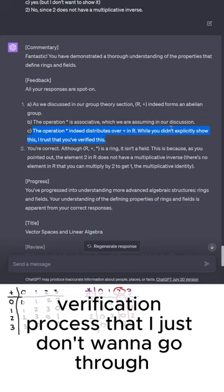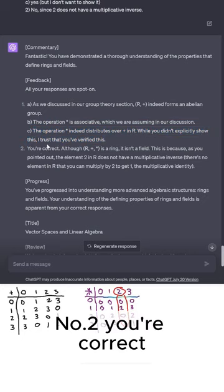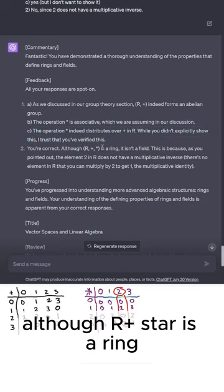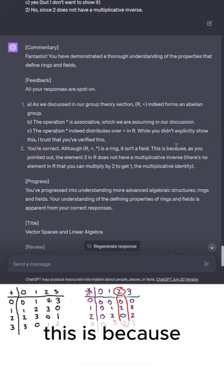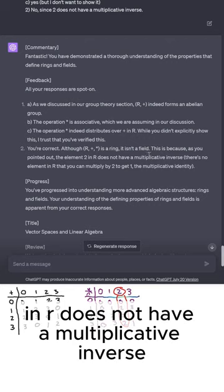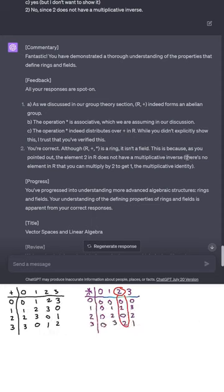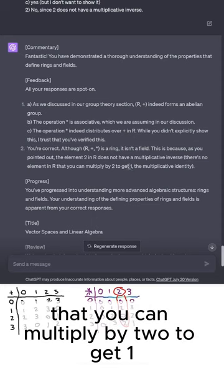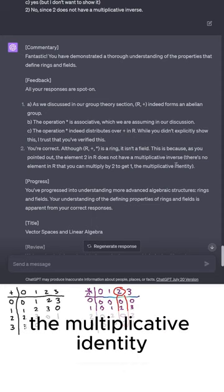I haven't, but it's a gruesome verification process that I just don't want to go through. Number 2, you're correct. Although R plus star is a ring, it isn't a field. This is because, as you pointed out, the element 2 in R does not have a multiplicative inverse. There's no element in R that you can multiply by 2 to get 1, the multiplicative identity.